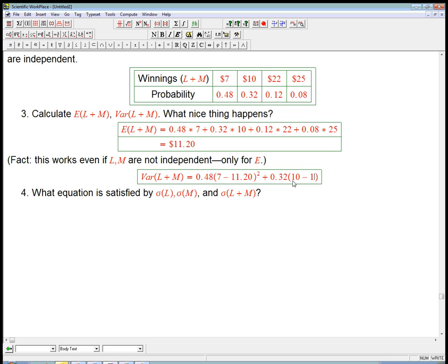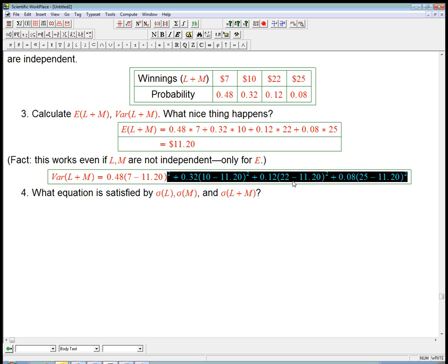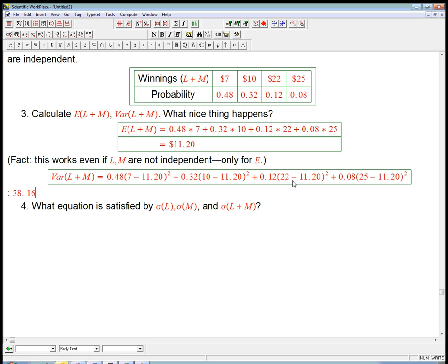And then it's going to be 10 minus 11.20 squared plus 0.12 times 22 minus 11.20 squared plus 0.08, the fairly small probability, although not tiny, of the big win. And then compare it and square it. Compare and square. It rhymes. So there's our standard formula. 38.16.